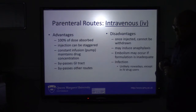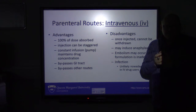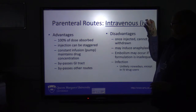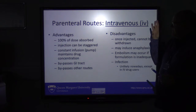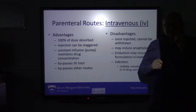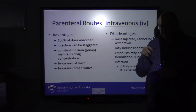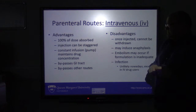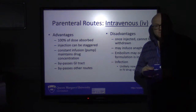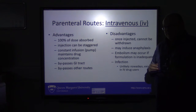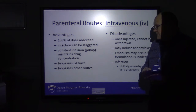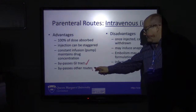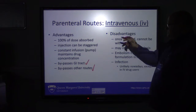Starting with the parenteral routes — these are the ones that avoid the gut, the ones that avoid the digestive tract. Probably the second most utilised route after oral is intravenous, such as an IV drip or IV injection. The advantage is that 100% of the dose administered is absorbed because you're injecting directly into the circulation — there's no absorption from a primary site, it's straight to the vasculature. You can stagger it, give a small injection, then another bolus, or give it through a constant infusion pump or an intravenous drip over a long period of time. Crucially, it bypasses the GI tract and other routes.